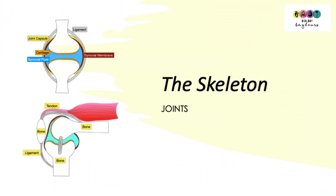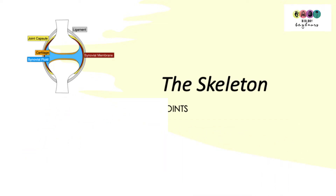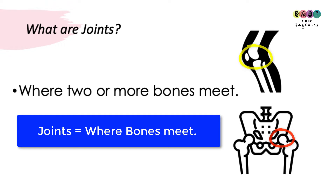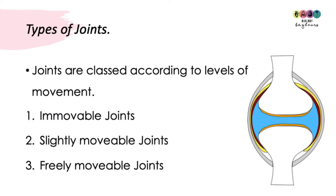This is video 3, the final video, and it's covering joints. So what are joints? A joint is where two or more bones meet. There are three types of joints and they're named or classed according to how much they can move — so the level of movement. There are immovable joints, then slightly movable joints, and then freely movable joints.